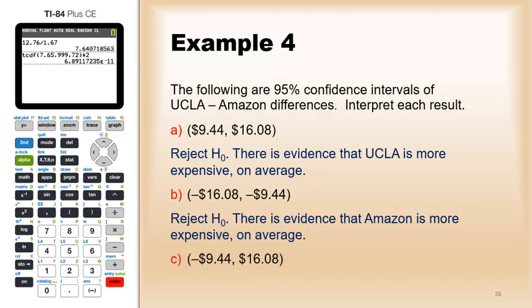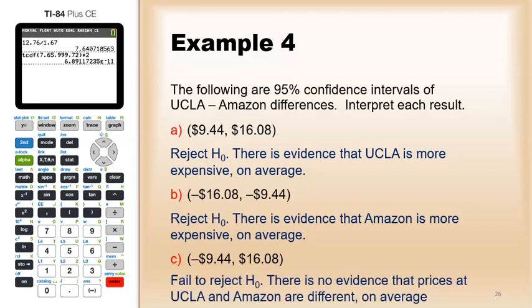On the other hand, if we went from like negative 944 to positive 1608, that number zero would be inside there. So, the null hypothesis is plausible and we would fail to reject. If this was my interval, there would be no evidence that prices at UCLA and Amazon are different on average.